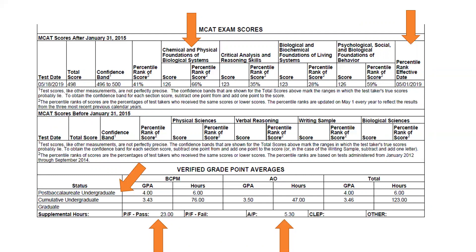AP credits, CLEP credits, and international baccalaureate (listed as 'other') also appear here, along with the post-baccalaureate GPA separately. Each section of the MCAT is listed with respective percentages. We also see the confidence band of the score — the plausible range. The total score is the center estimate. For example: we are 95% sure this student scored between 496 and 500, with a center best estimate of 498. Confidence bands really do impact score interpretation, as there's usually a four-point range.